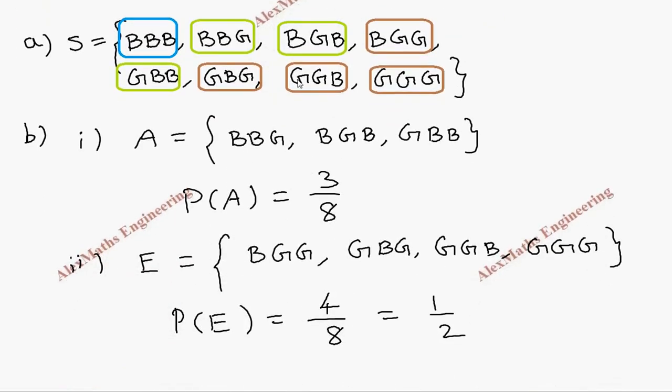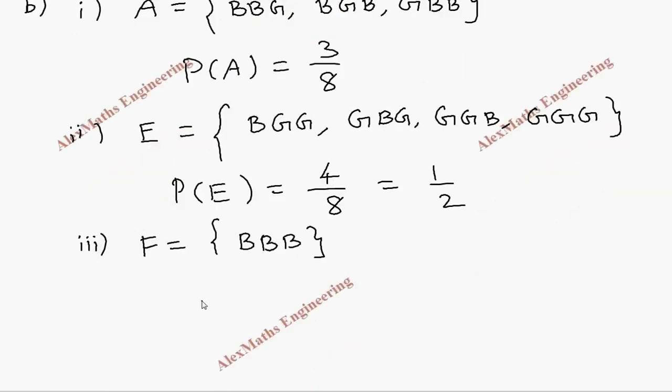So let's take this as event F, which is all boys BBB, and its probability is one out of eight.